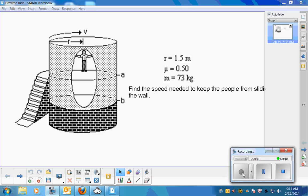All right, so we've got our little people. They went on the Gravitron ride. This is a tiny, tiny little one. We're supposed to figure out what the speed is to keep the people from sliding down the wall. They tell you what the radius is, the coefficient of friction, and the mass of the people.